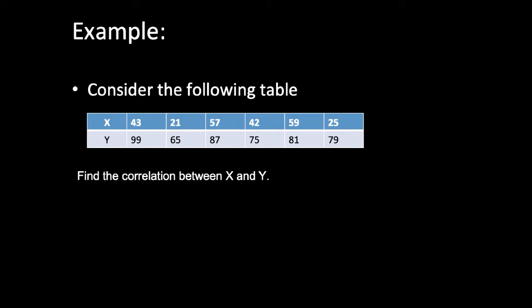Let me explain with an example. We have two variables x and y. The x values are: x1 = 43, x2 = 21, x3 = 57, x4 = 42, x5 = 59, x6 = 25. The y values are: y1 = 99, y2 = 65, y3 = 87, y4 = 75, y5 = 81, y6 = 79. The coordinates are (43, 99), (21, 65), (57, 87), and so on.